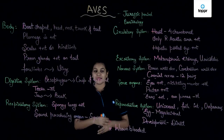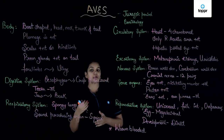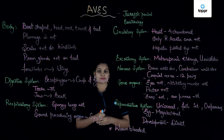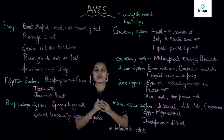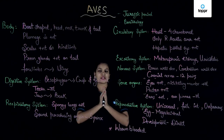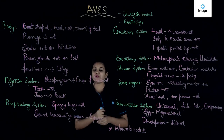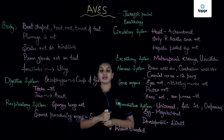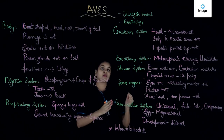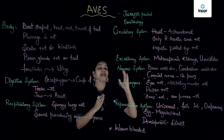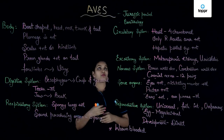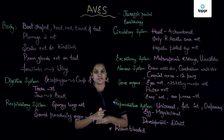Hello everybody! In this session you are going to learn about a class which is called Aves. Aves consists mainly of the true birds — this is the class which has a lot of colorful birds. Birds originated by the end of the Jurassic period of the Mesozoic era, and the study of birds is called ornithology.